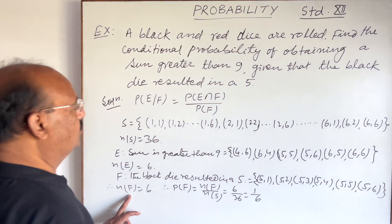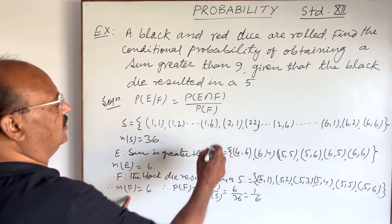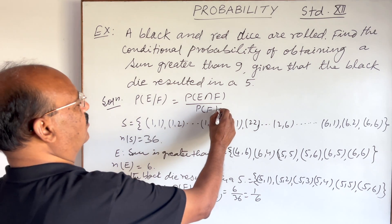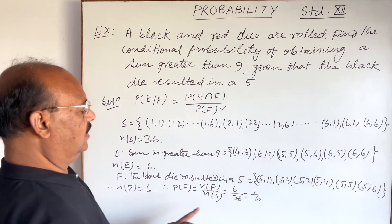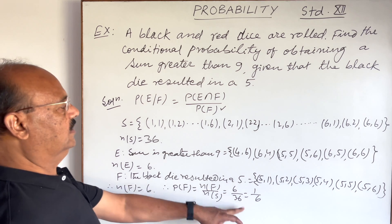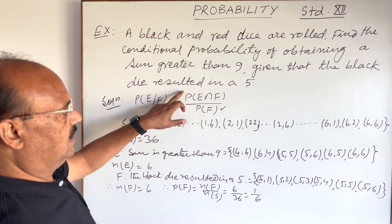Therefore, the probability of F is equal to n(F) divided by n(S), which is 6 divided by 36. This simplifies to 1 by 6. So P(F) = 1/6, which is our denominator in the conditional probability formula.